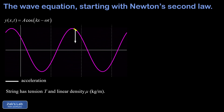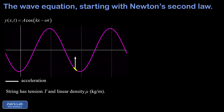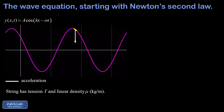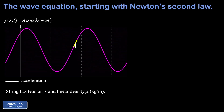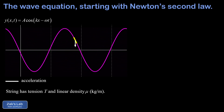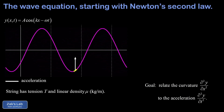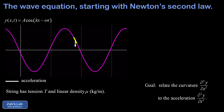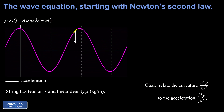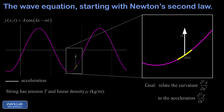The acceleration is shown as a white vector as the mass oscillates. We see that the acceleration is upward when the mass is below equilibrium and downward when the mass is above equilibrium. To get the wave equation, the idea is to relate the curvature of the string — the second x-derivative of the wave function — to the acceleration of this little mass increment, i.e., the second time derivative of the wave function.